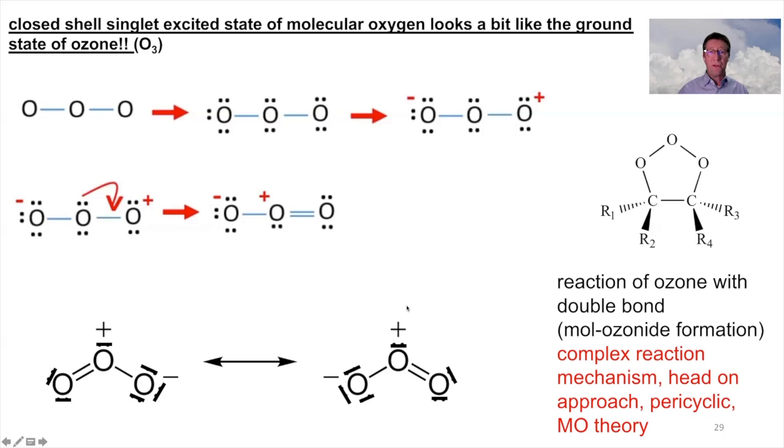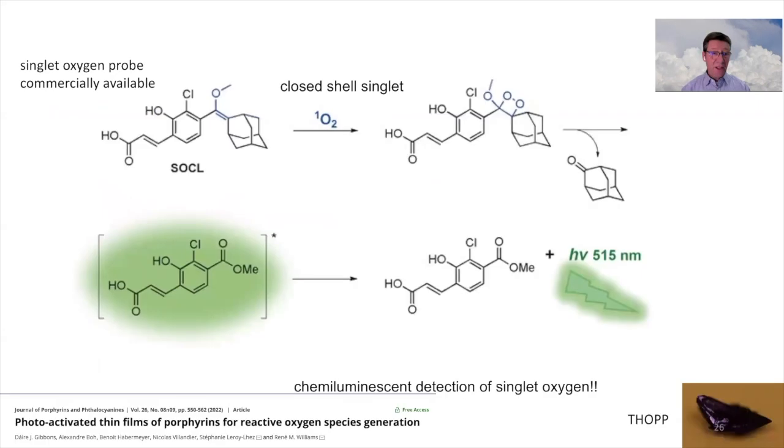But ozone can react with double bonds. And then you get this five-membered ring structure, the so-called mole ozonides. To fully understand the reaction of ozone with double bonds in the so-called pericyclic reaction, we actually need quantum theory. We need the molecular orbital theory.